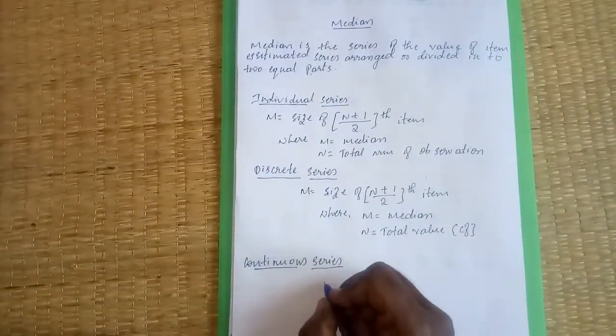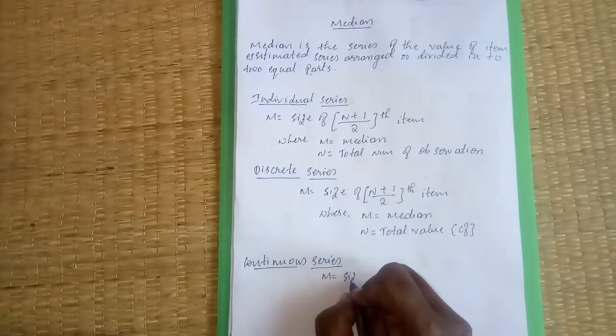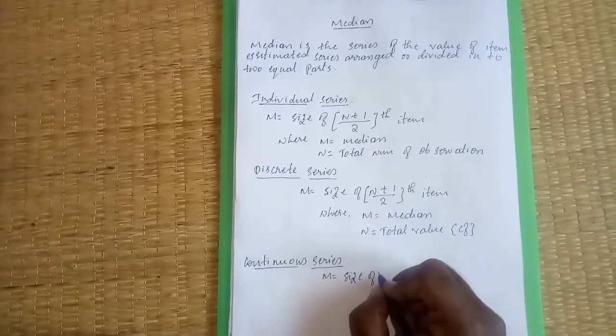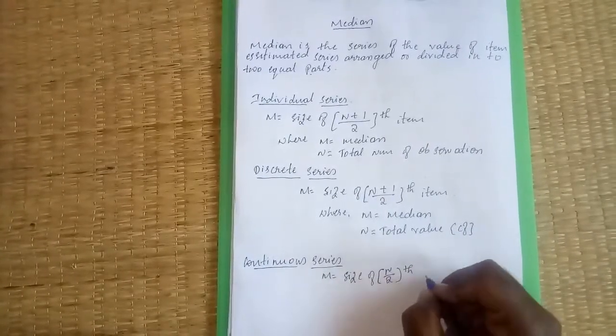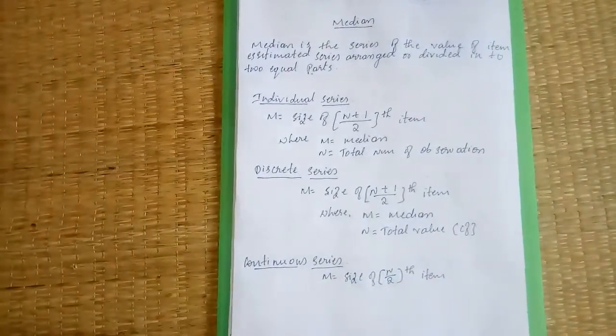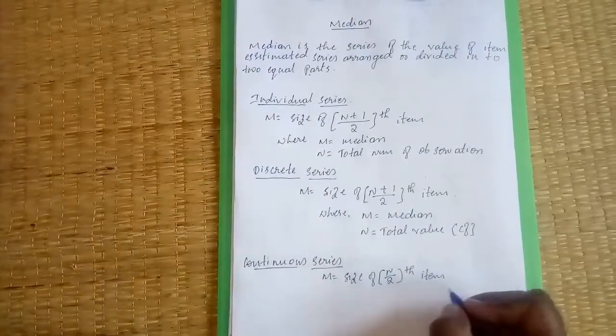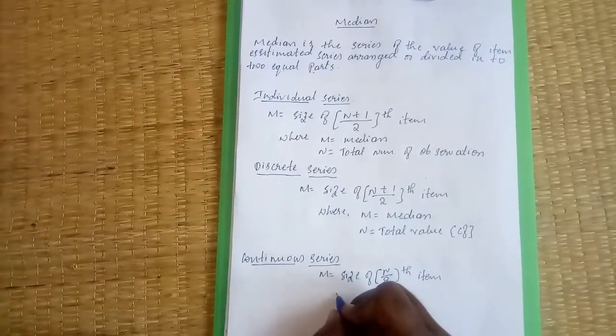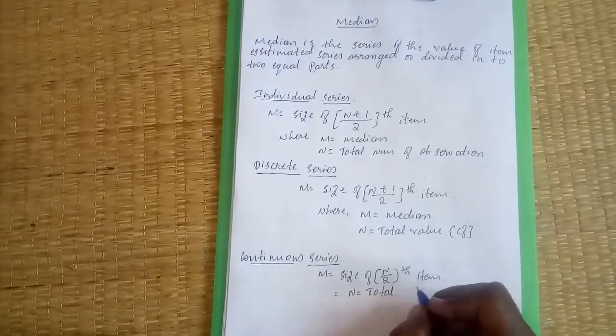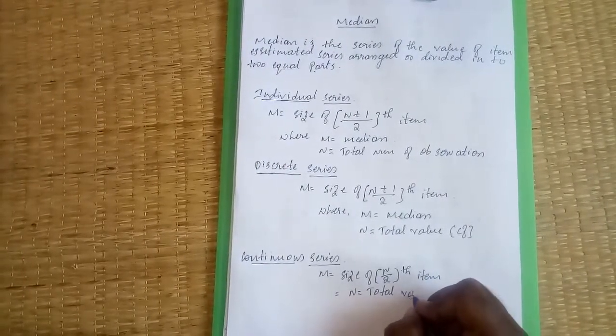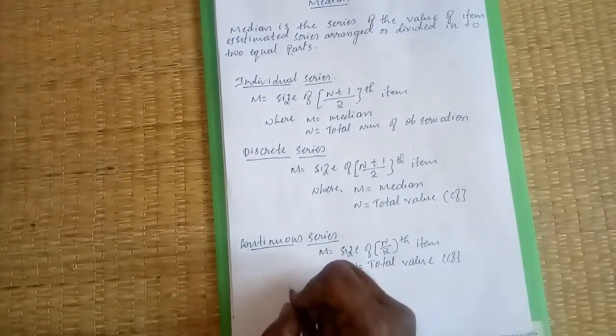M equals size of n by 2 item. So n equals total value - n equals total value.